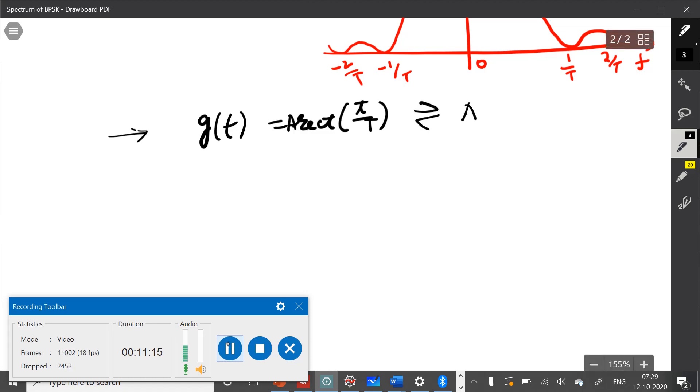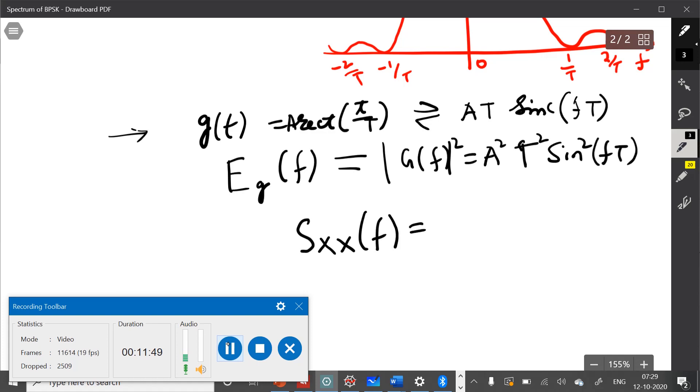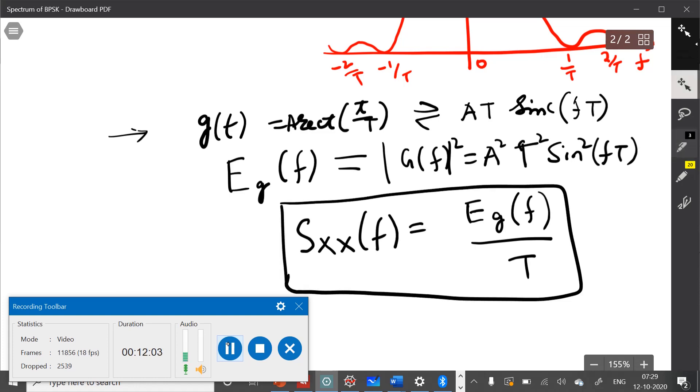What will be the energy? The energy of this pulse, because it comes from Percival's theorem, it is magnitude of the Fourier transform, which is A square T square sinc square F T. So the power spectral density of random binary wave can be written as the energy spectral density divided by T.